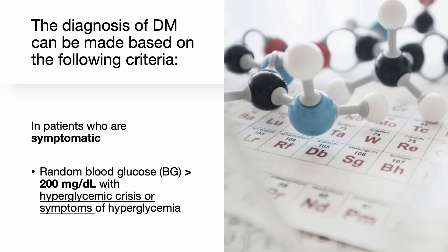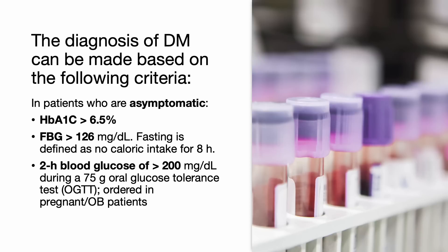The diagnosis of diabetes can be made based on the following criteria. In patients who are symptomatic, a random blood glucose of more than 200 with hyperglycemia crisis or symptoms of hyperglycemia defines the diagnosis. In patients who are asymptomatic, the following criteria must be met: a hemoglobin A1c of at least 6.5%, a fasting blood sugar of at least 126, or a 2-hour blood glucose level of more than 200 during a 75-gram oral glucose tolerance test, which is primarily for pregnant women.